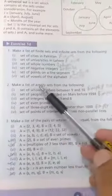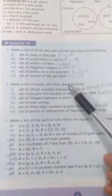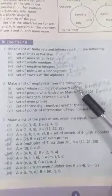Question number 2: Make a list of empty sets from the following. We have to tell which set is an empty set.